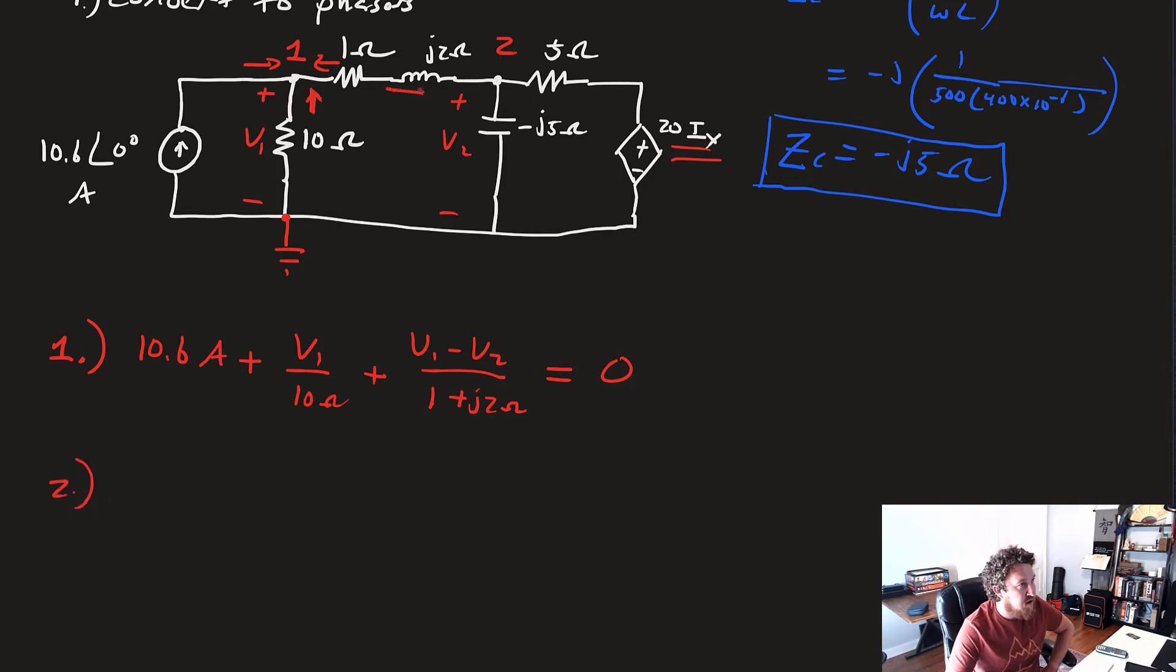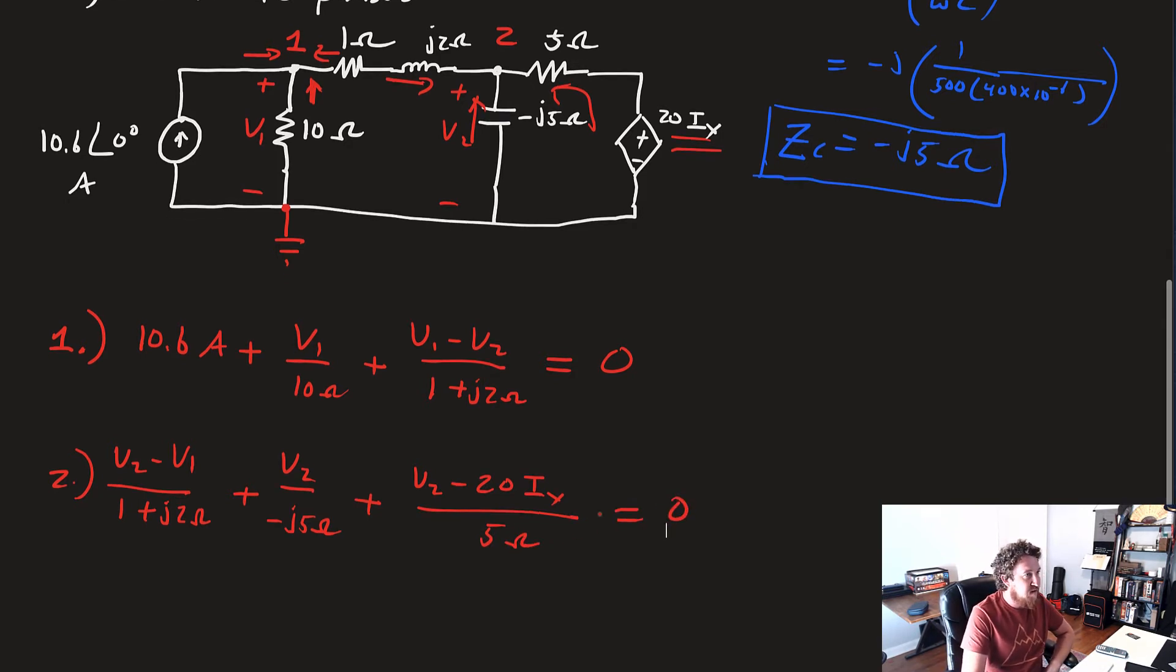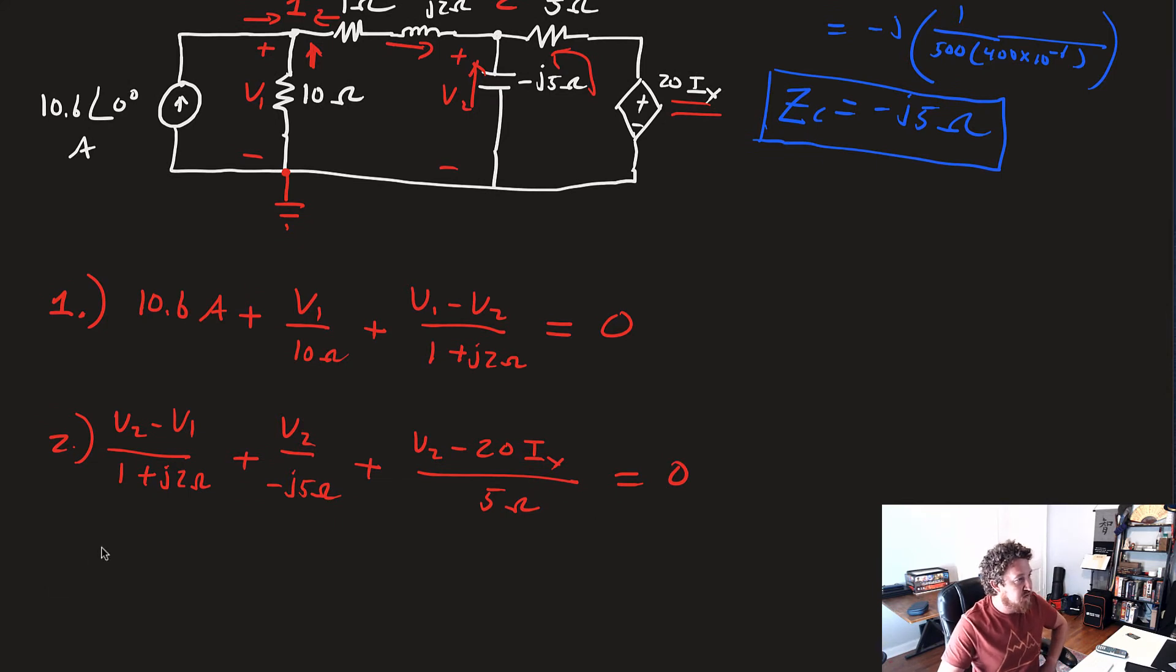Then we'll have equation number 2. We'll have V2 minus V1 over 1 plus J2 omega, plus V2 over minus J5 omega, plus V2 minus 20Ix over 5 ohms. That's equal to 0.